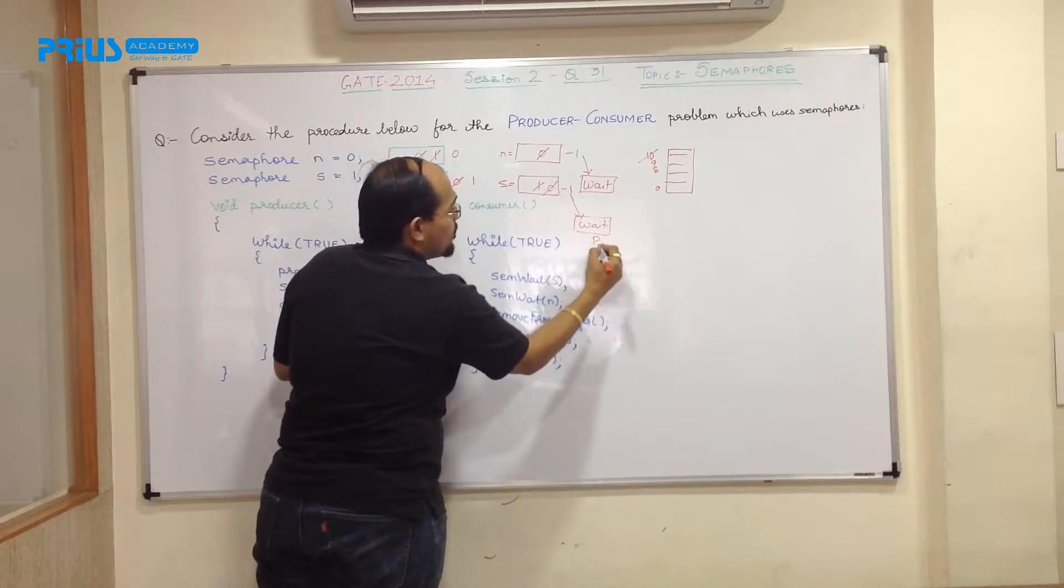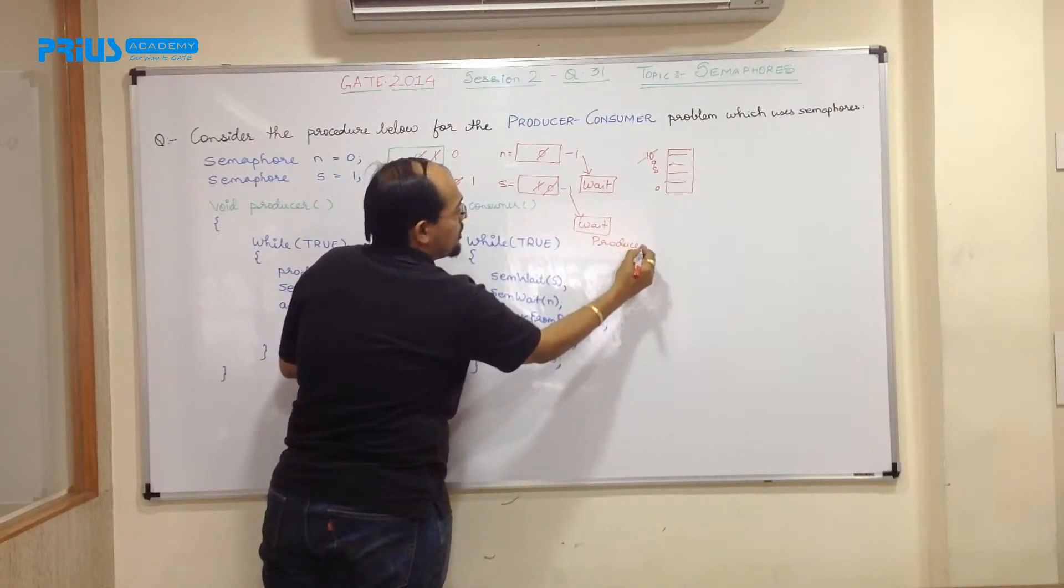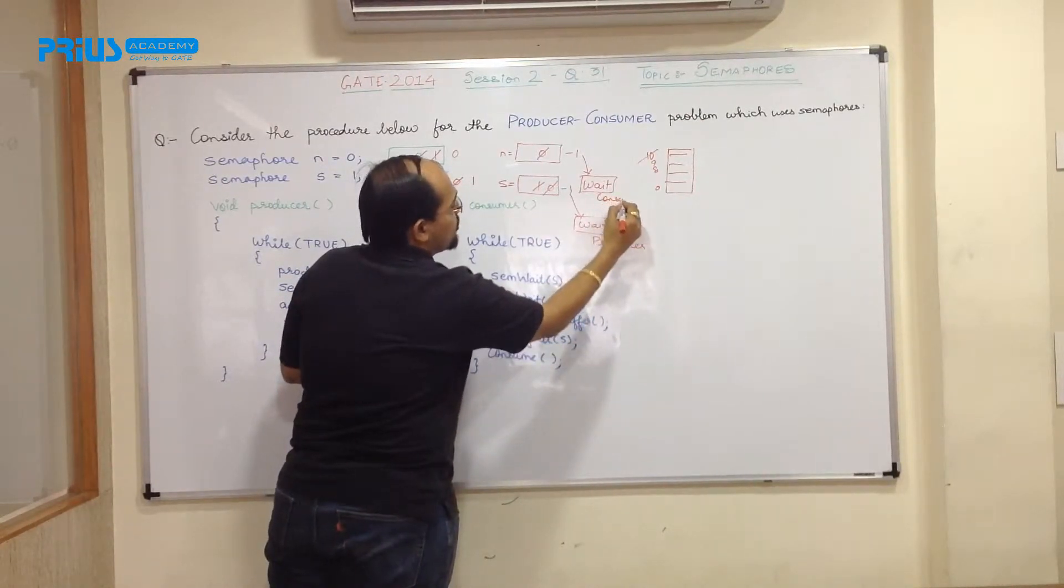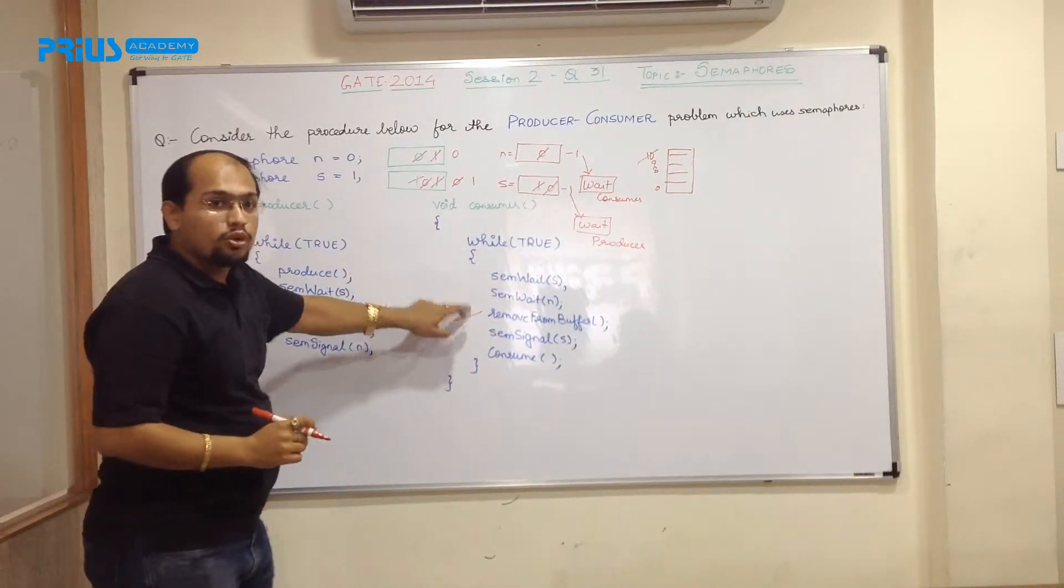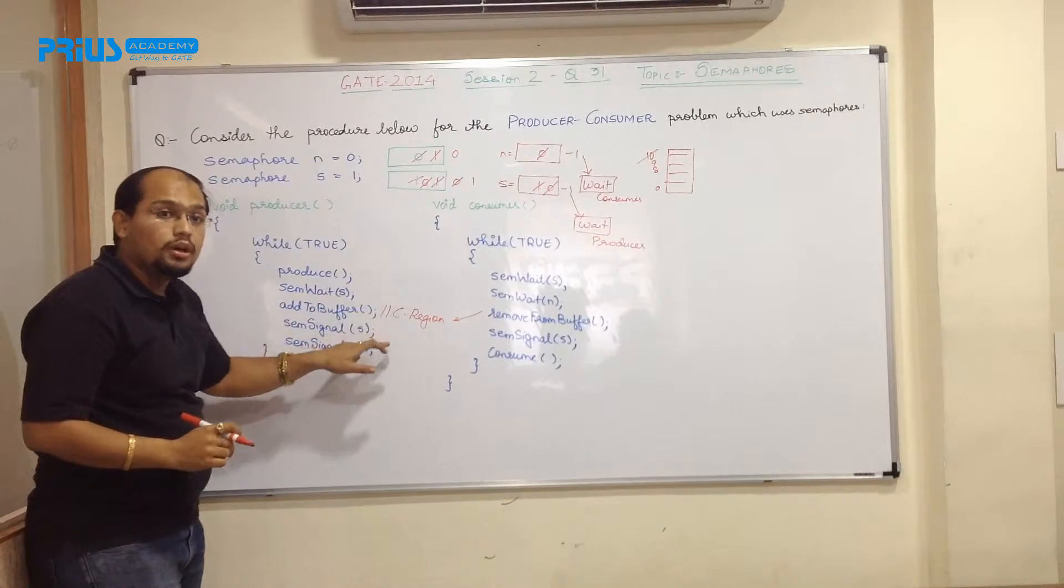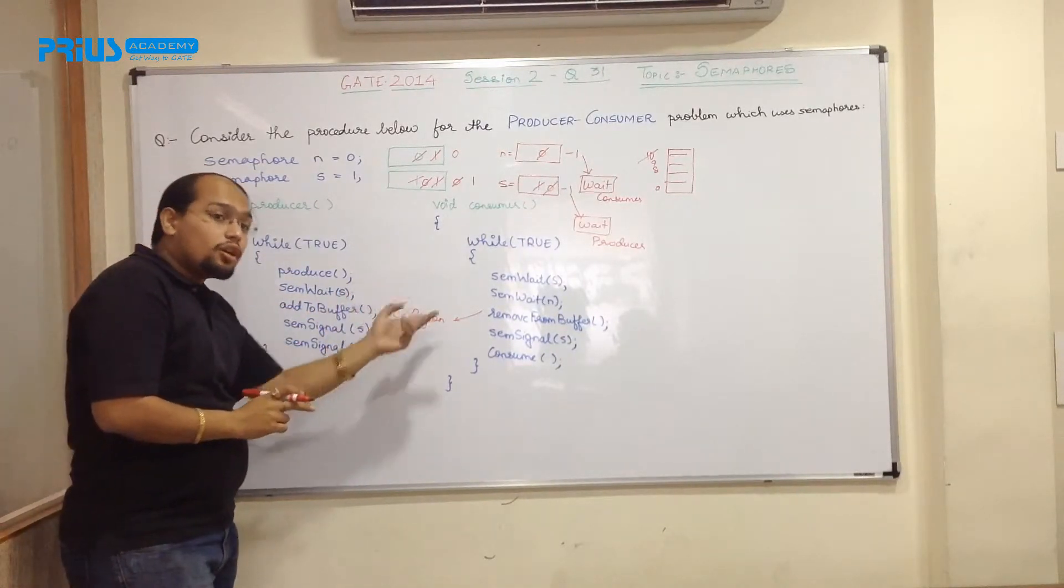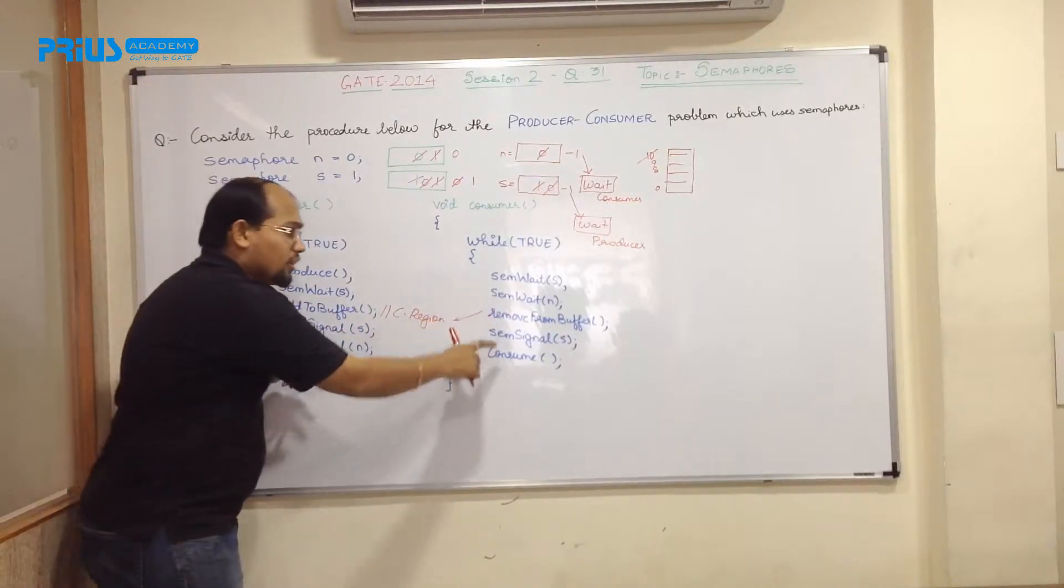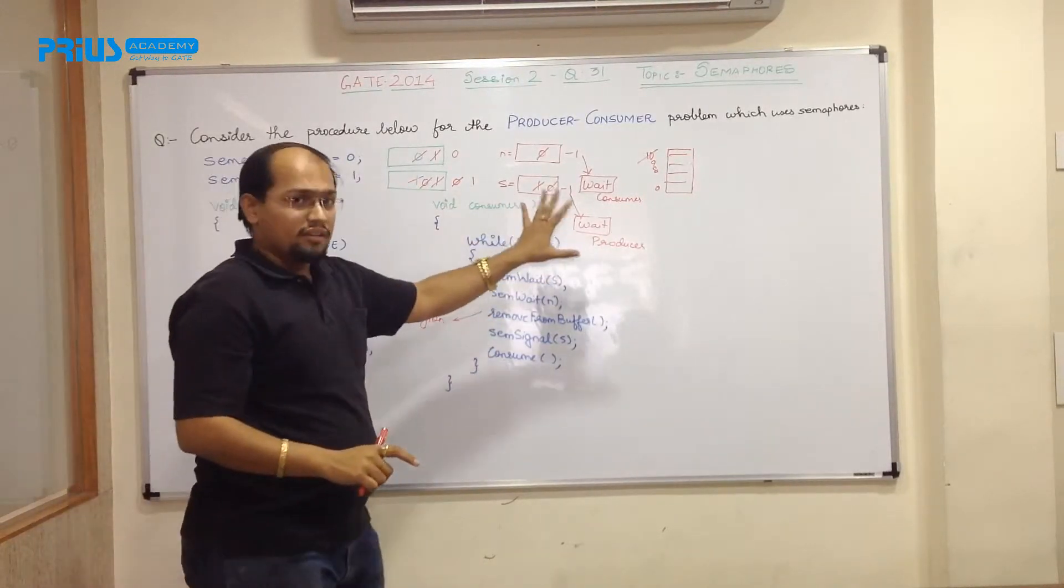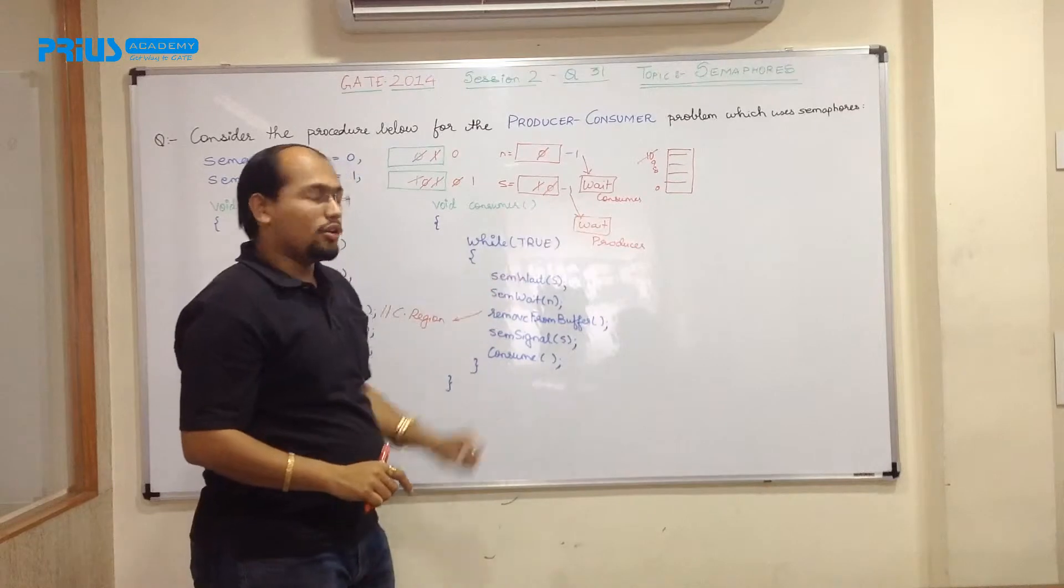So this is a waiting mode for a producer and this is a waiting mode for a consumer. So what happens? Consumer is waiting for producer to produce and producer is waiting for consumer to release the resource. As a result, there is a deadlock between the two process. So this cannot proceed further, this cannot proceed further. So this option tells me that there is a deadlock.